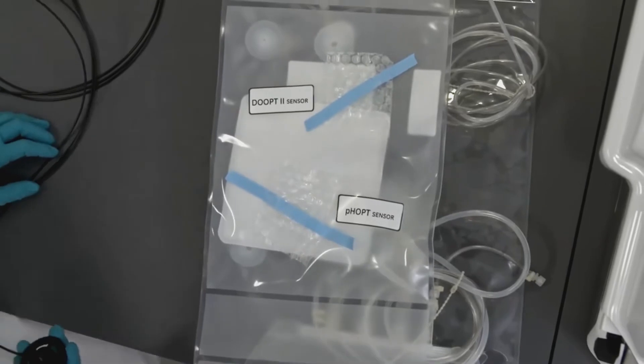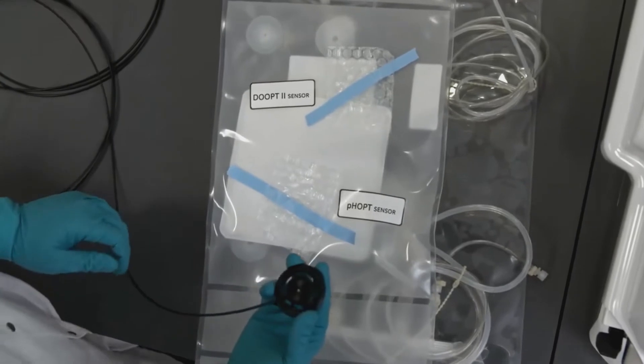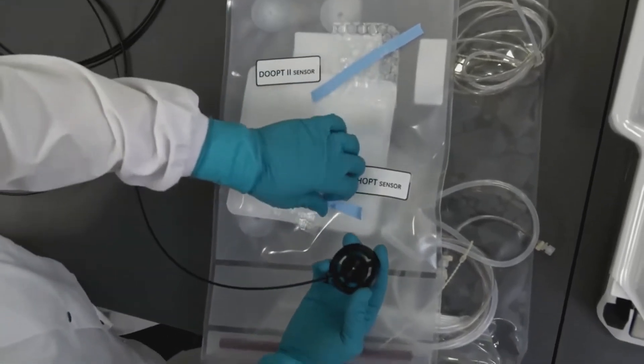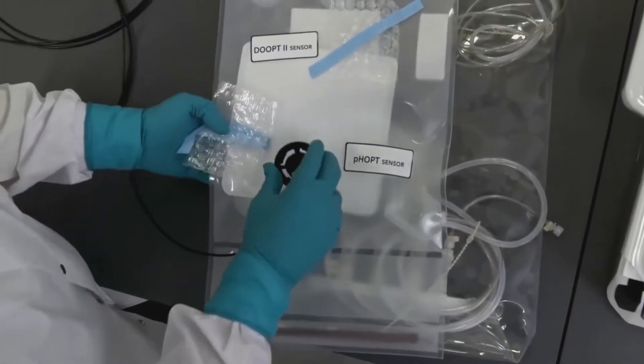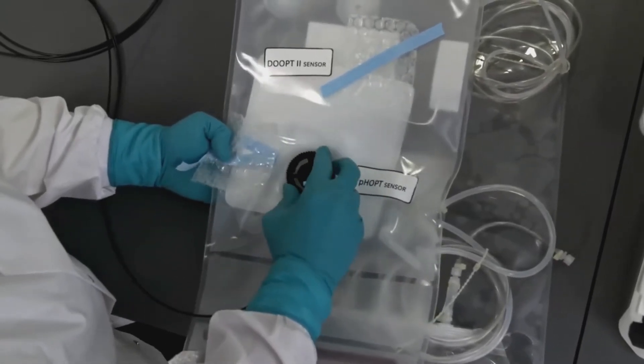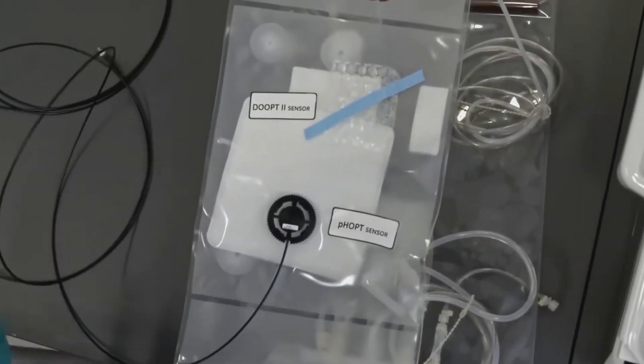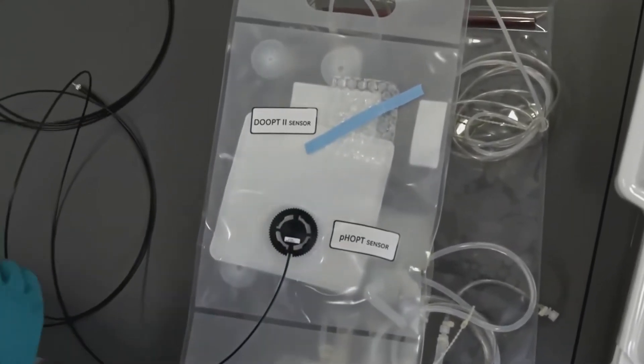So now we'll connect the pH and the DO sensors to the bag. This is on the back of the cell bag. You'll have a sensor that looks like this, and you'll remove the bubble wrap and connect the sensor, and then you can fully remove all the bubble wrap, and you'll do the same for the DO sensor as well.